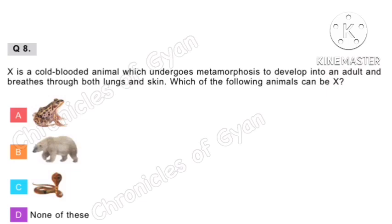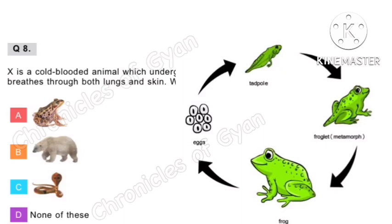Question 8. X is a cold-blooded animal which undergoes metamorphosis to develop into an adult and breathes through both lungs and skin. Which of the following animals can be X? Metamorphosis means a complete change of form in natural development — for example, frog. The correct option is A, frog.